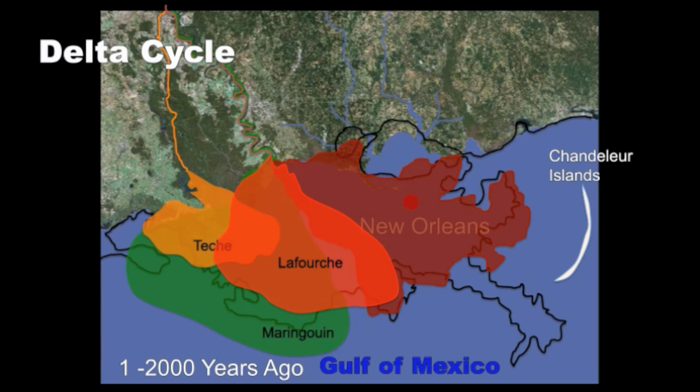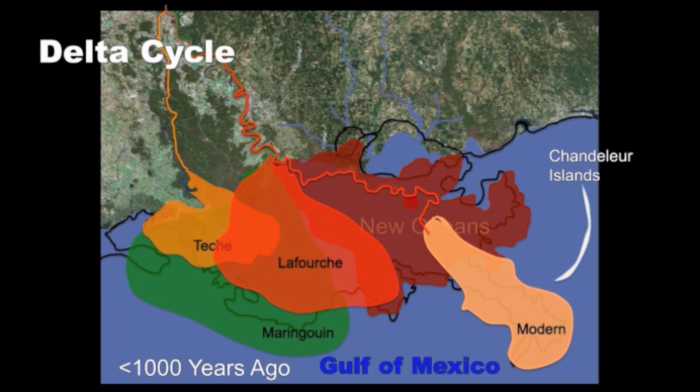When the river switched to a new course, the abandoned lobe began to deteriorate — a process that caused the formation of barrier islands. The last area to form is what is now the modern delta.